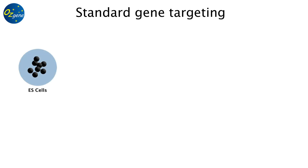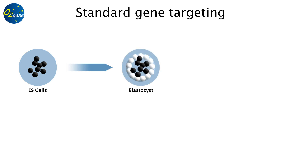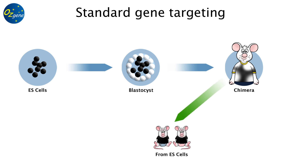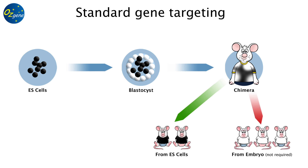You generate genetically modified ES cells, which are then introduced into host blastocysts to generate chimeras. When the chimeras are mated, you get offspring derived from the ES cells and offspring from the host. This is what you want. This is what you do not want.